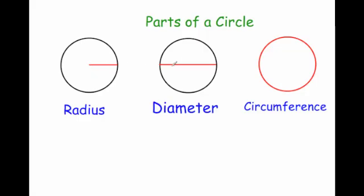The diameter is the line that goes from one side of a circle to another side and passes through the center. It's the whole way across the circle.